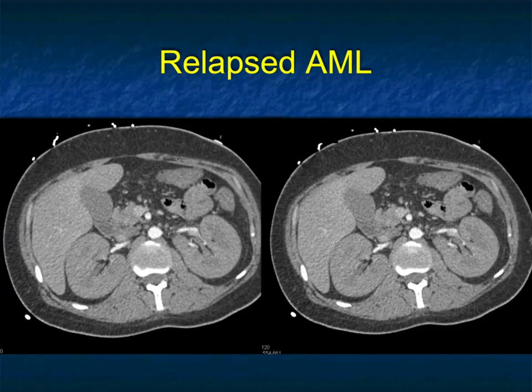One of the things we all do is scan a lot of oncology patients. Obviously, we sometimes scan for renal cell or other renal tumors, but we scan for many, many things, and the kidneys are always part of the study. We look for hydro, we look for metastasis, but you also want to look at the corticomedullary interface.